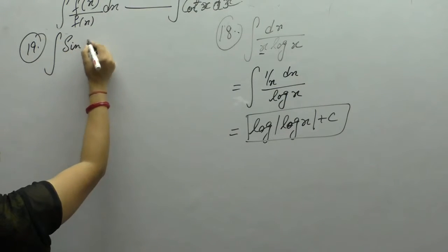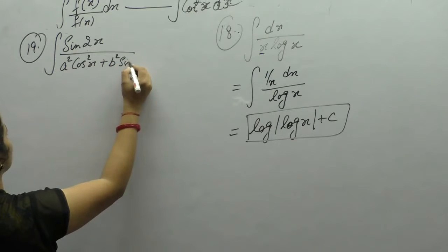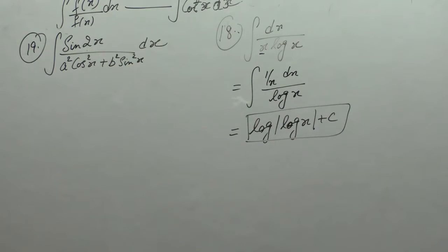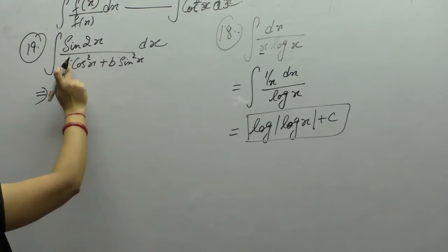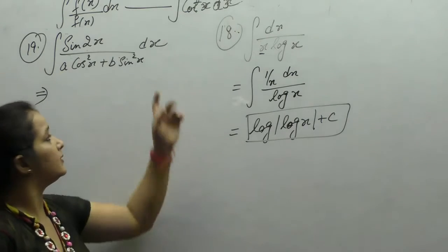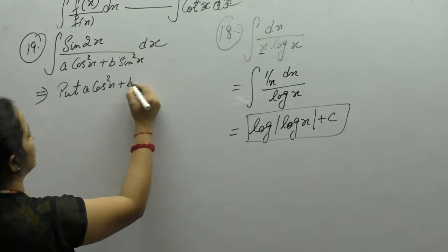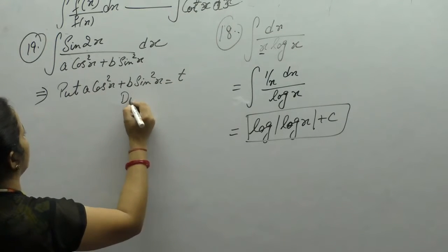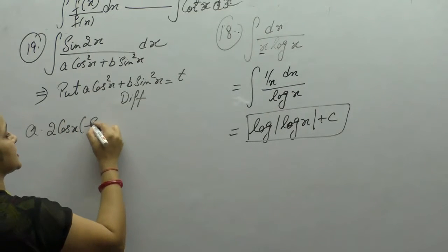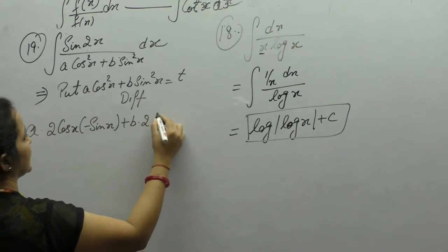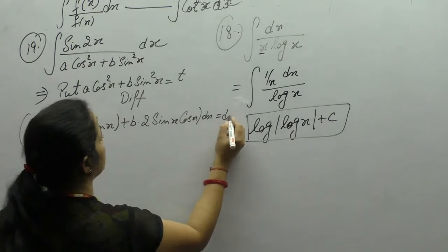Next question is integration of sin2x/(a²cos²x + b²sin²x). Here we don't directly know the derivative of the denominator, so we put the denominator as t: let t = a·cos²x + b·sin²x. Now differentiate: a is constant, derivative of cos²x is 2cosx·(−sinx), plus b times derivative of sin²x is 2sinx·cosx dx = dt.